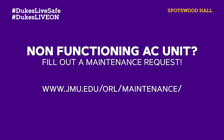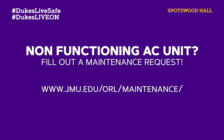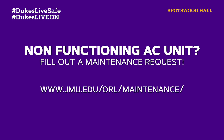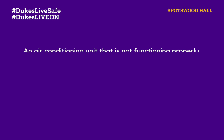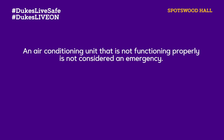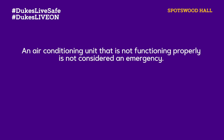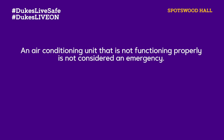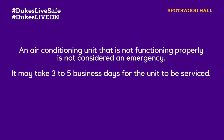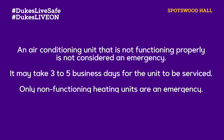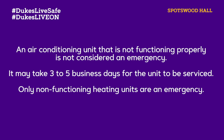Have a non-functioning AC unit? Fill out a maintenance request at www.jmu.edu/orl/maintenance. An air conditioning unit that is not functioning properly is not considered an emergency — it may take three to five business days for the unit to be serviced. Only non-functioning heating units are an emergency.